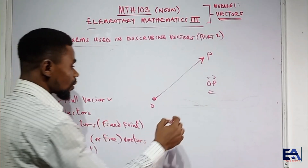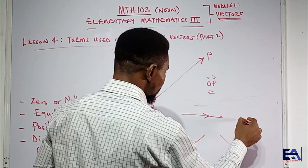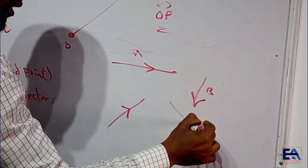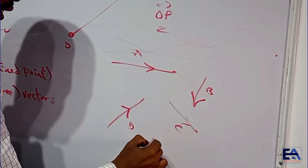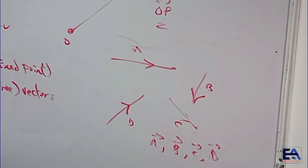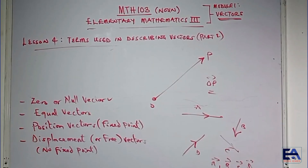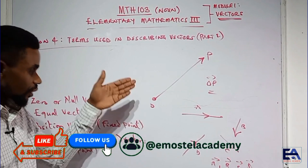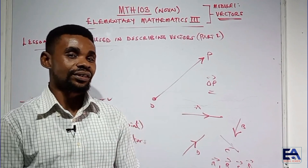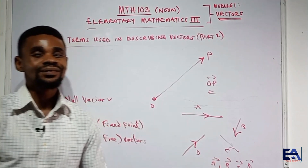The other type is the displacement vector. In this case they are free vectors — they are not tied to a particular point. I can have vectors A, B, C, and D all acting freely. These are free vectors and they are displacement vectors, not tied to a fixed point. This leads to another topic in vectors which we are going to address in the next video. See you there, bye.